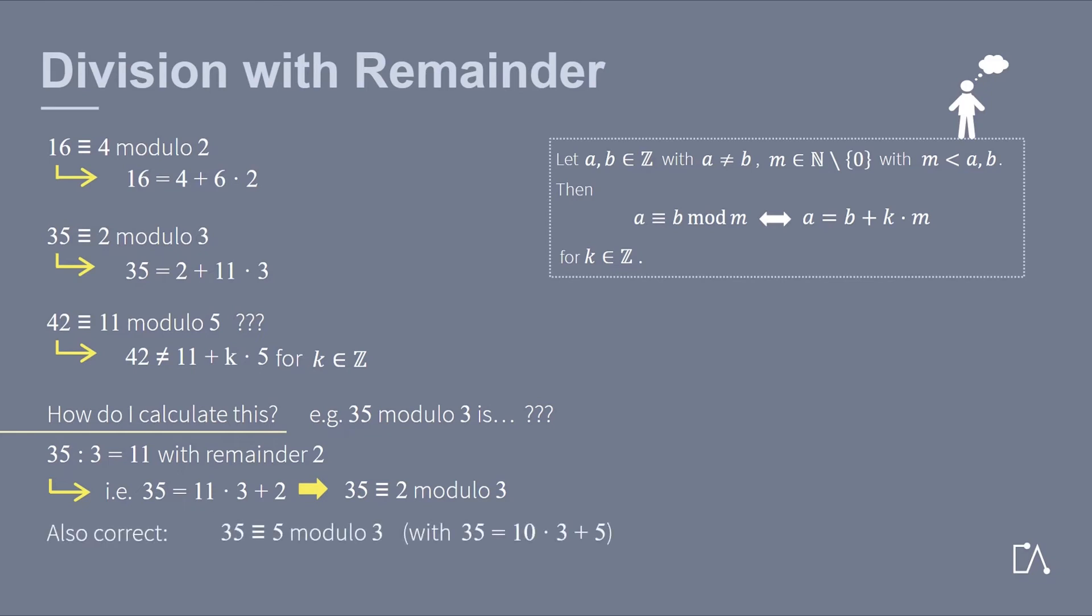Note that it is also correct to say that 35 equals 5 modulo 3. The division with remainder only gives the smallest positive integer value. Other solutions are also true since they only differ by a multiple.